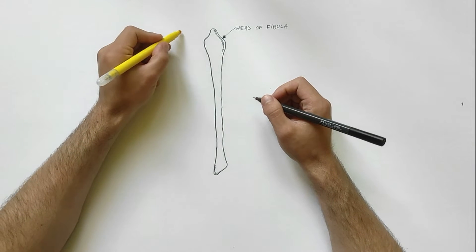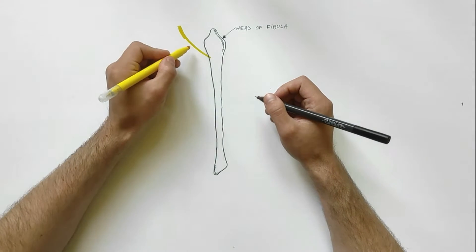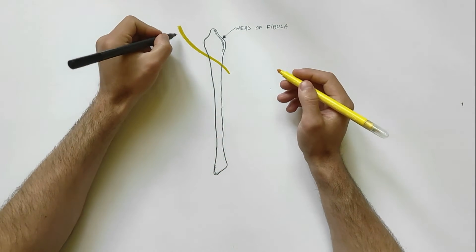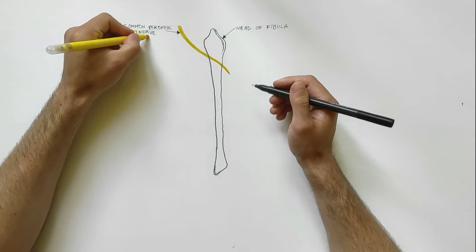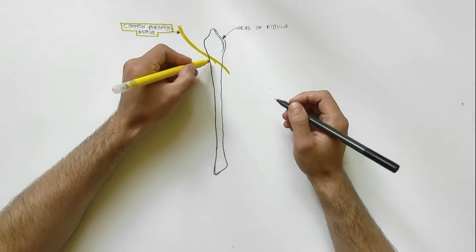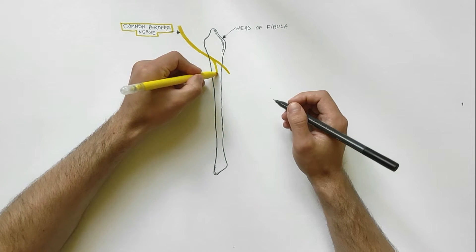The common peroneal nerve is the smaller terminal branch of the sciatic nerve. It travels along the medial border of the biceps femoris and then winds around the neck of the fibula where it divides into two terminal branches.